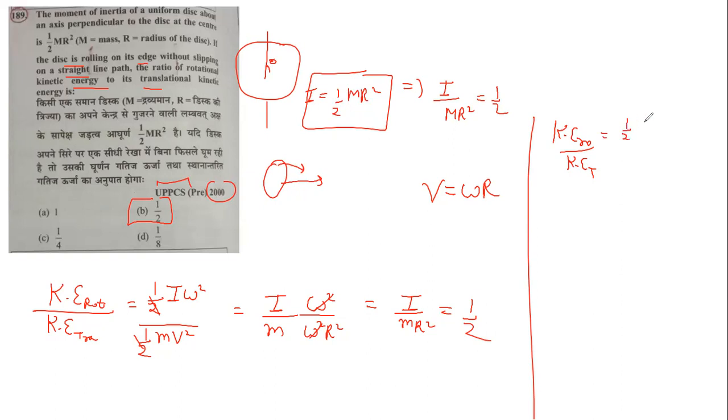So we have half I omega squared over half m v squared. This gives I over m r squared, which equals one-half.